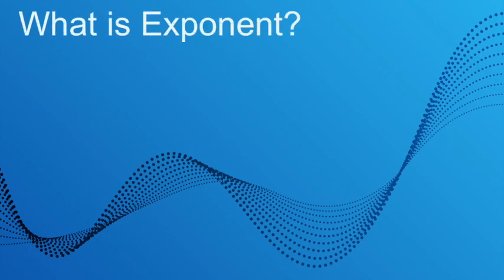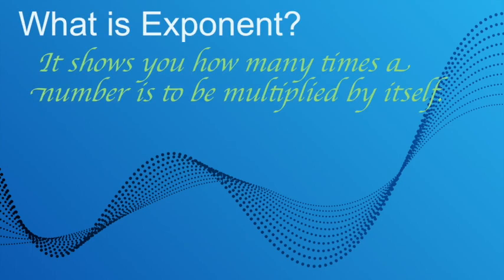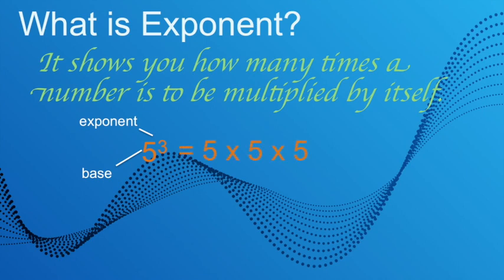What is an exponent? An exponent tells you how many times a number is to be multiplied by itself. For example, 5 cubed, or 5 raised to the power of 3, or 5 to the third power. Here the exponent is 3, and the number that we multiply by itself is called the base — in this example, the base is 5. By definition, 5 cubed is equal to 5 times 5 times 5, so the exponent 3 tells you to multiply 5 by itself 3 times.